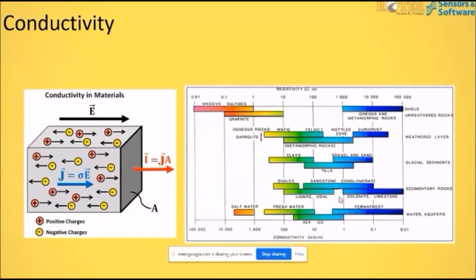The reason we discuss conductivity in the context of GPR is that it plays a vital role in estimating the maximum depth of interpretation that the GPR can actually record. For example, water can be saline, fresh, or frozen — all these states give a dielectric constant value of 81 for water, but their conductivity is different. We cannot determine the state of water from dielectric constant alone; conductivity rules must also be applied.